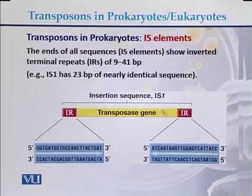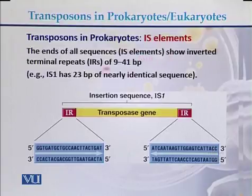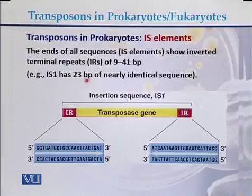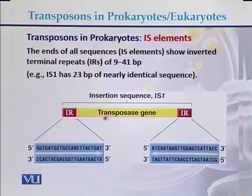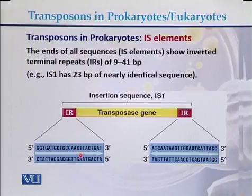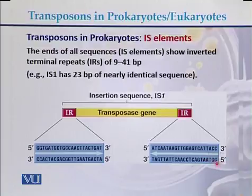The ends of all IS elements show inverted terminal repeats of 9 to 41 base pairs. For example, IS1 has 23 base pairs of inverted repeats. In the diagram of an insertion sequence, there is a transposase gene in the center with inverted repeats on both sides — for example, GG-TGA on one end and GG-TAA on the other.